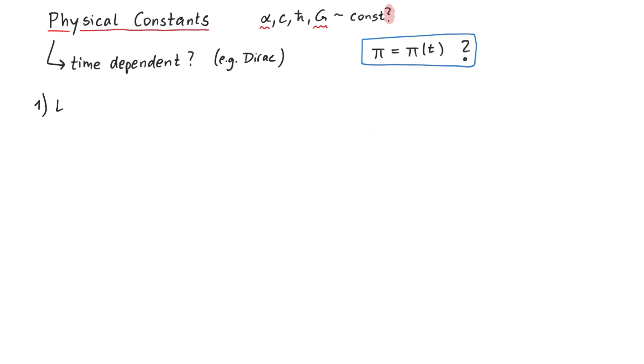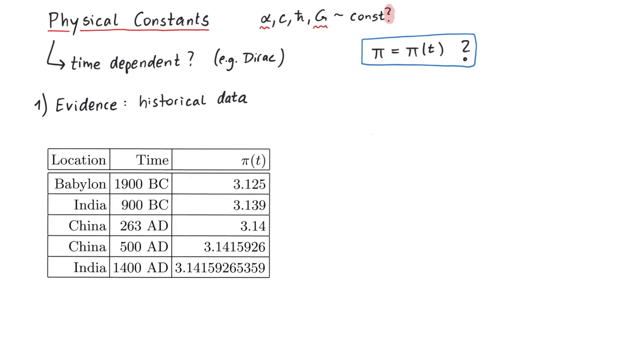First, some evidence of pi's time dependence. The author has compiled a list of places and times at which the value of pi was measured. From this, we can see that there might also be a spatial dependence, that is, pi of t and x.